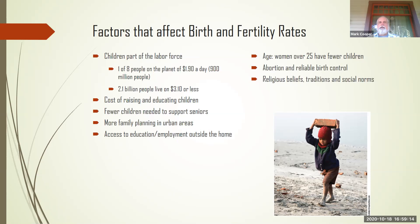Other factors include the cost of raising and educating children, and the fact that fewer children are needed to support seniors. People used to have lots of kids to make sure someone supported them in old age. Family planning, access to education, age of women — women over 25 tend to have fewer children — abortion, reliable birth control, religious beliefs, traditions, and social norms all play a role.